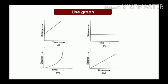If the graph has curves or lines which are not patternable, then the object is moving with non-uniform speed. These are the various uses of graphical representation of data.